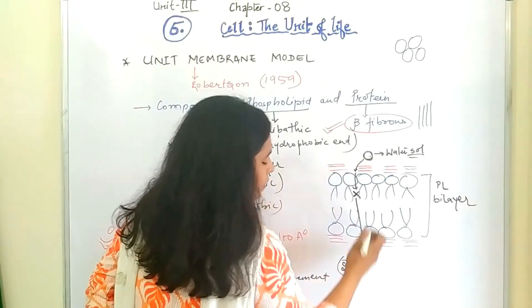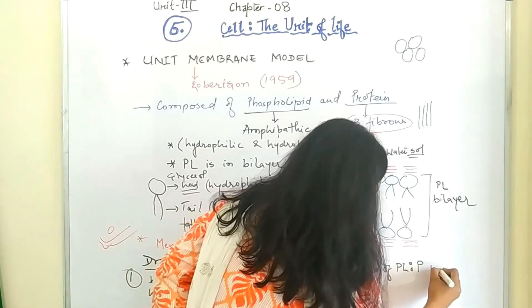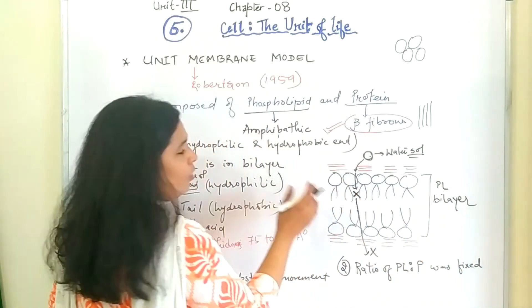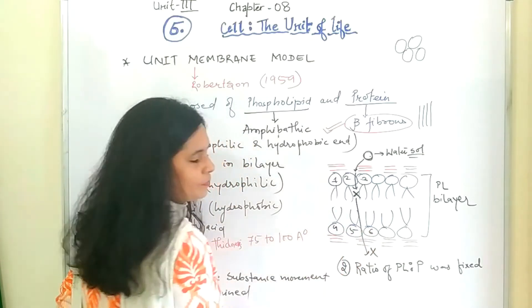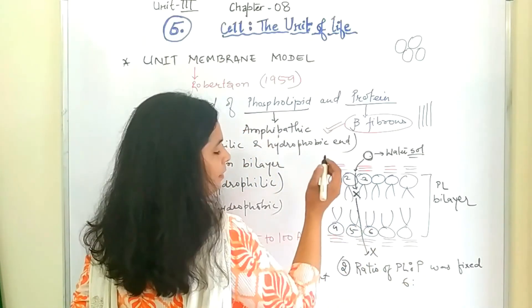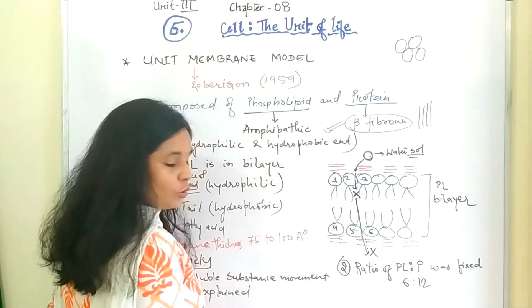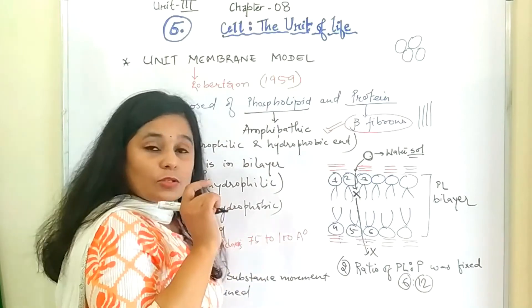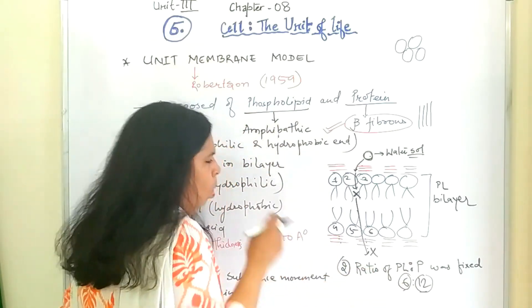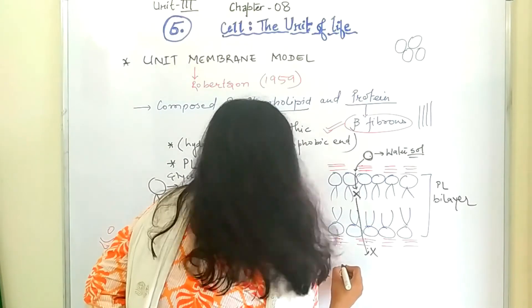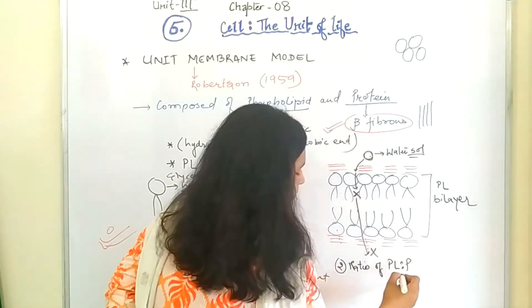Second drawback, that the ratio of phospholipid to protein was fixed. Fine? So the protein, if we count, and phospholipid, this ratio is fixed. And this is the biggest drawback. Because if the ratio is fixed and they are not changing, this is a problem.